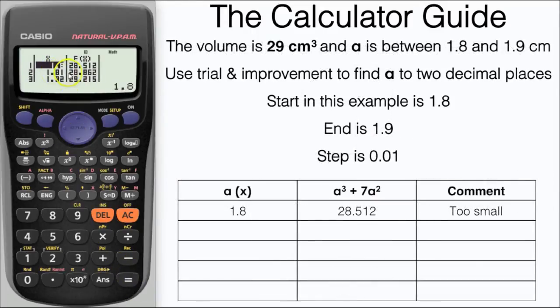The first value I'm going to write down is 1.8 gives me a value of 28.512 but that's too small, we're looking for 29. Scroll down to the bottom and here we have our value for 1.9, 32.129 which is too large.